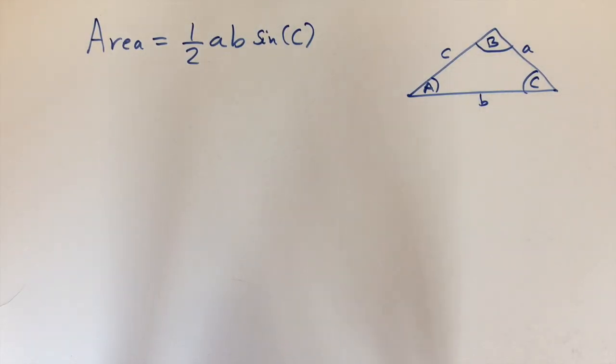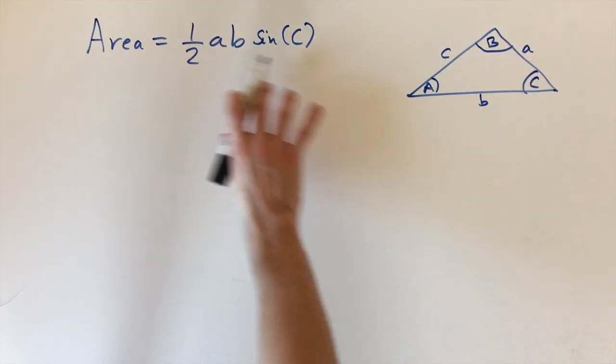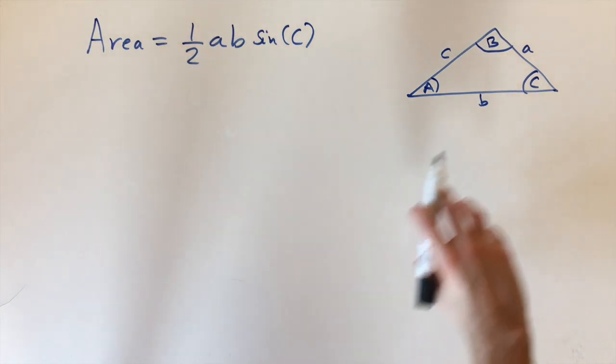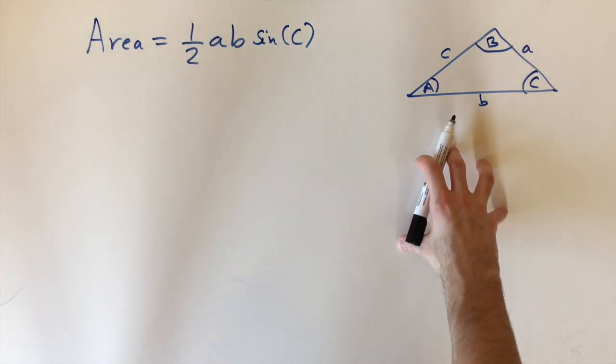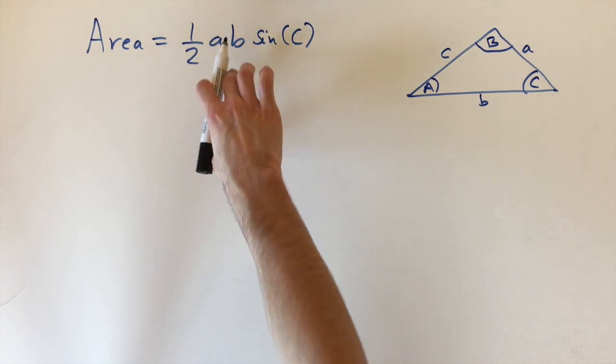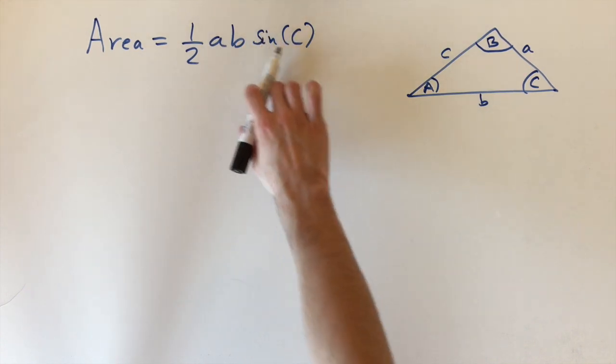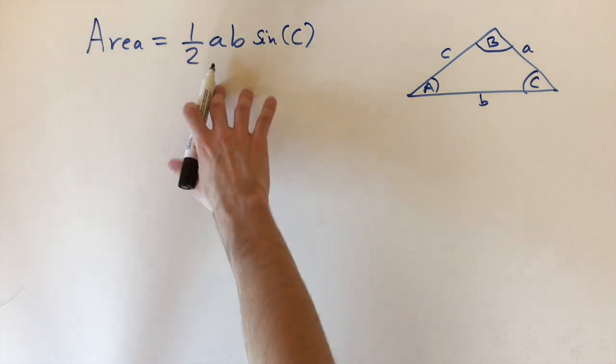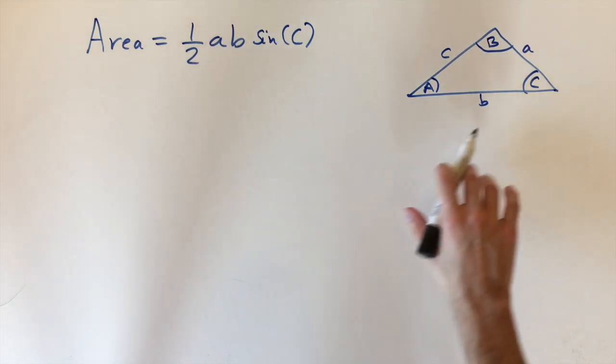Welcome back. Today we're looking at this formula that gives us the area of a triangle—for any triangle, it doesn't have to be a right angle triangle. Essentially it's 1/2 times a times b times sine of the angle C. It's important when dealing with these letters that we use this convention.